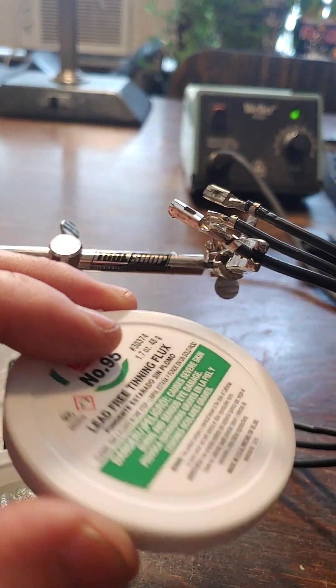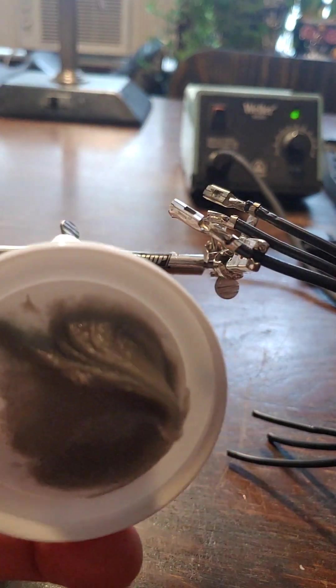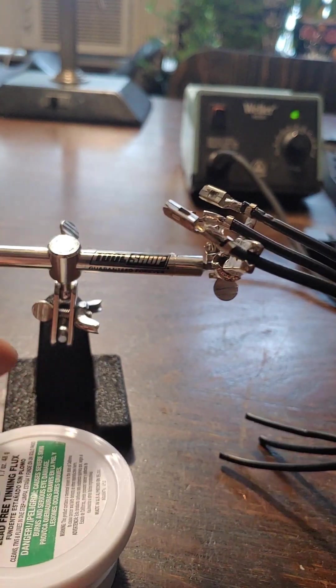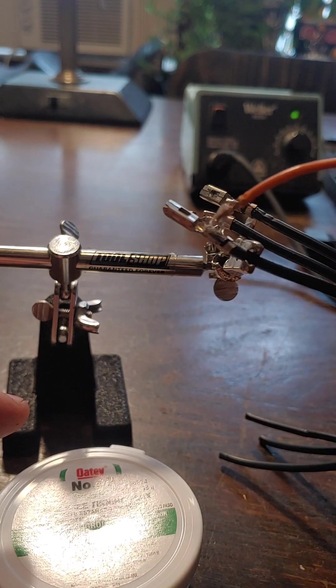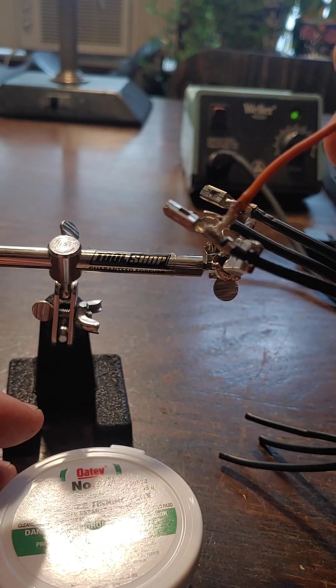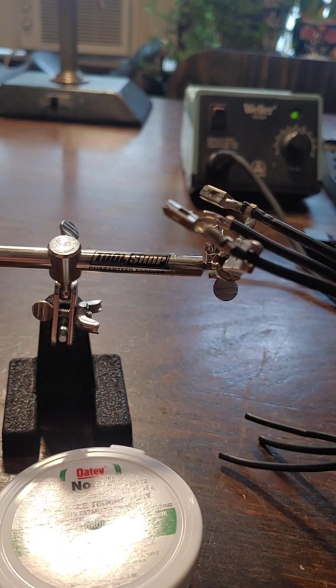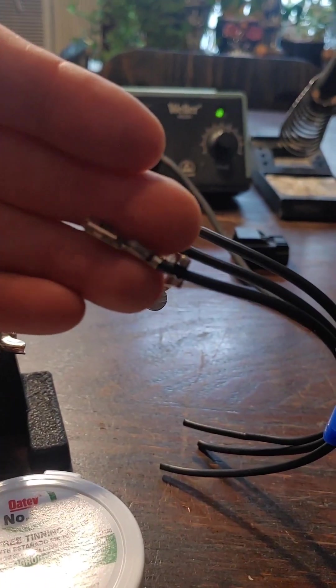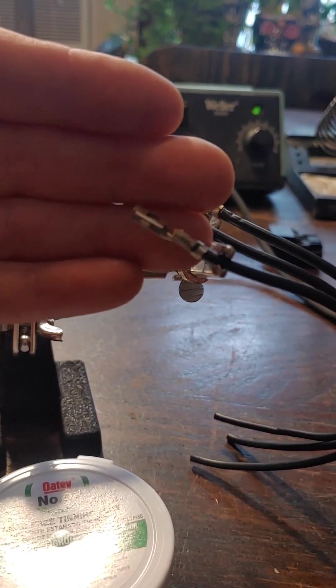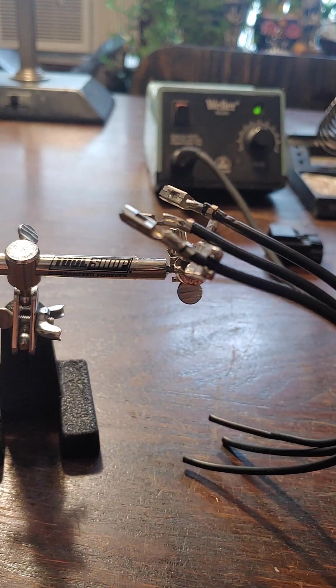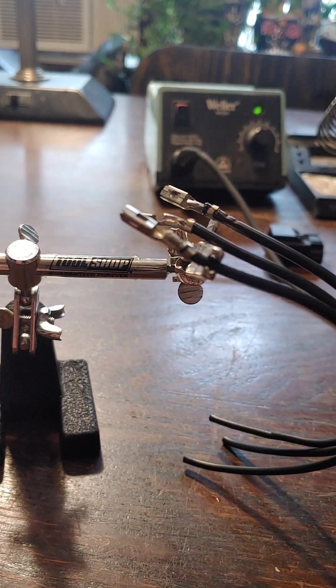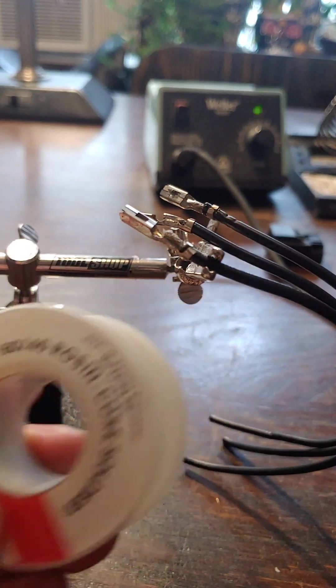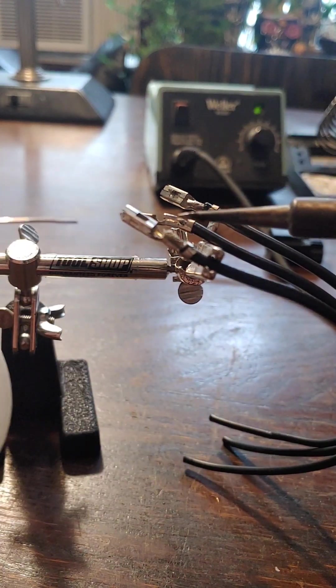All right, so this is the flux that I have. I was looking for some rosin flux but I was a little hard pressed to find that here in the cities where I live - wasn't the easiest thing to find. So I put a little bit on there before I crimped it together. I crimped that end on there, make sure it focuses here. And then take my soldering iron here.